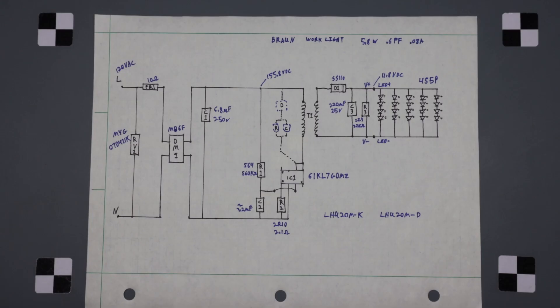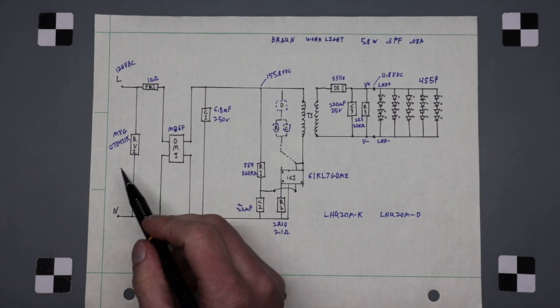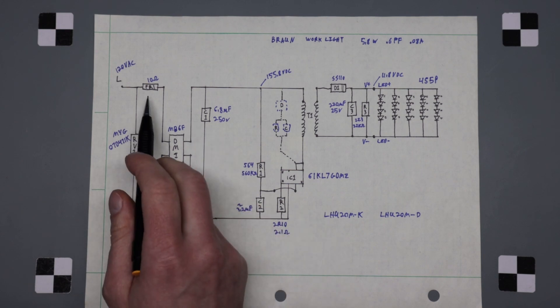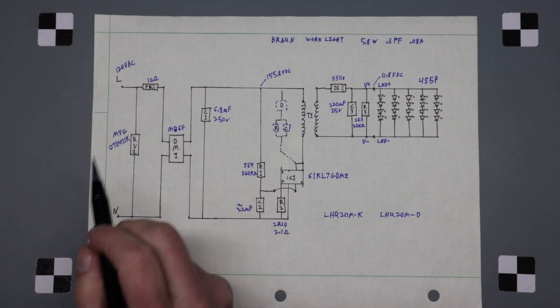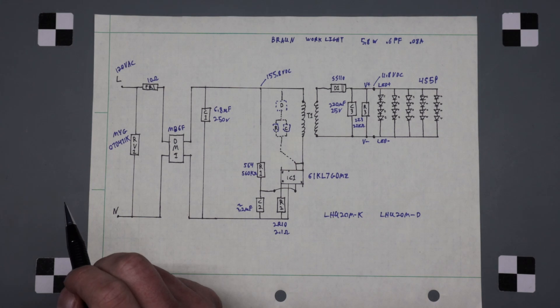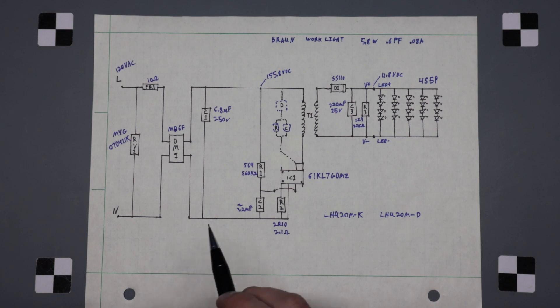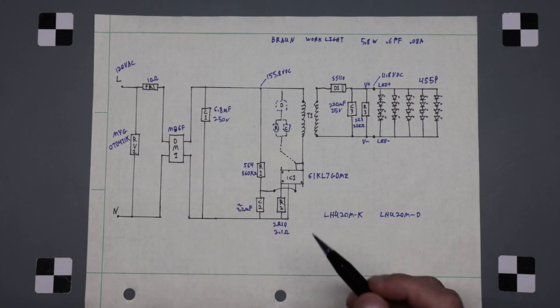All right, back with the diagram. We have line, neutral, a varistor, fusible resistor which was brown, black, black, gold, black - 10 ohm, a bridge rectifier, smoothing capacitor, and then we move into the driver.